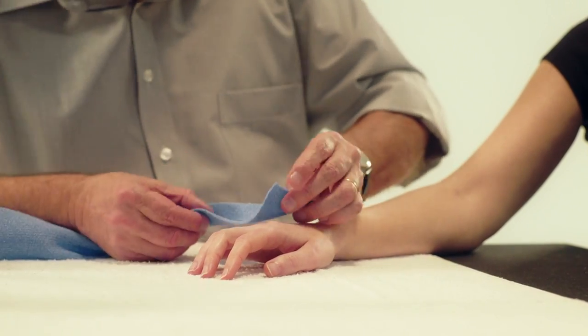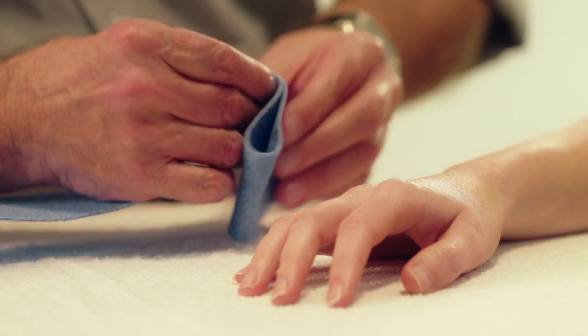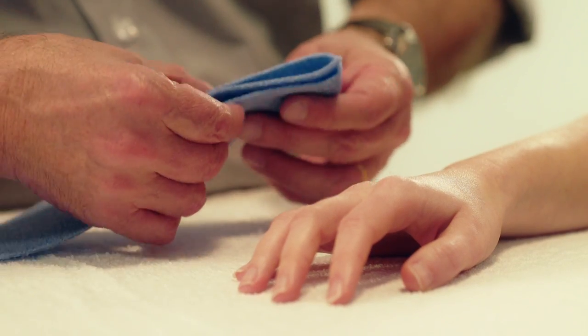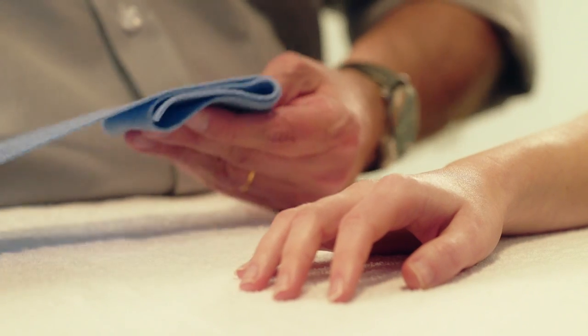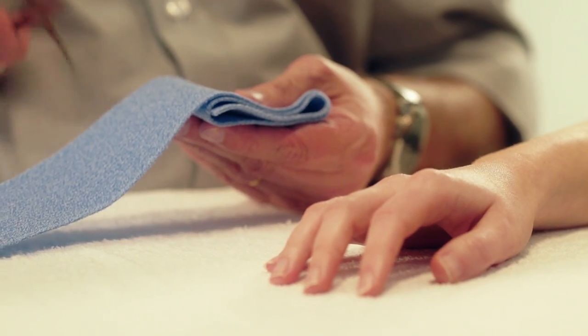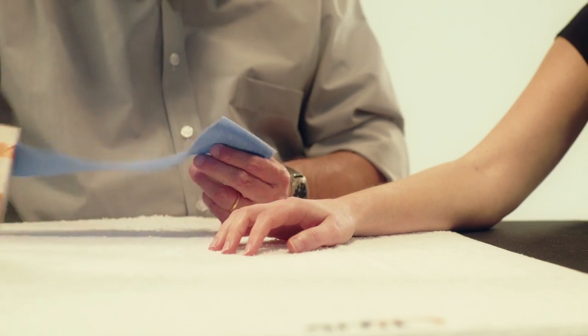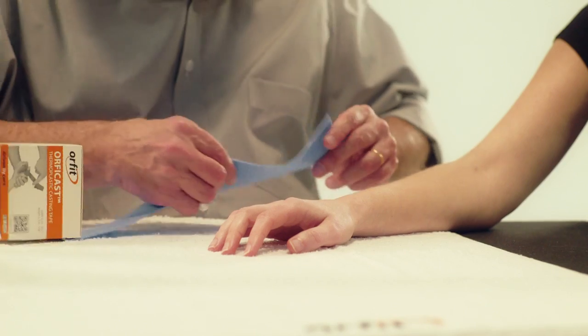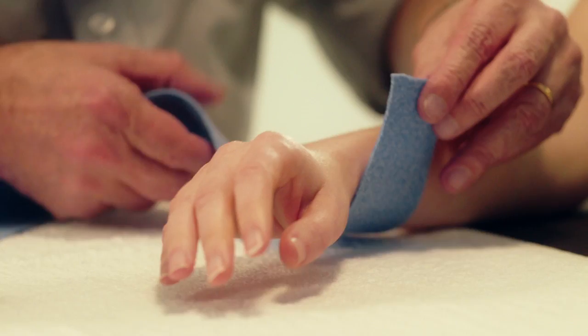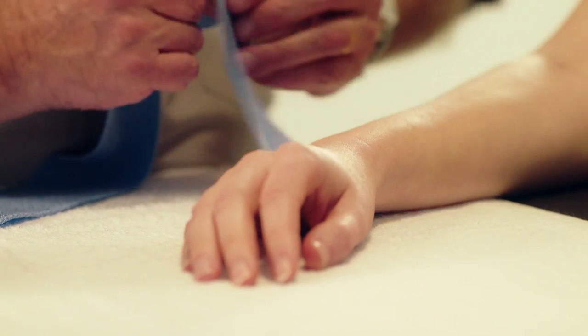We will need two different pieces of Orphicast. Take the first strip of Orphicast six centimeters wide, measure four times the width of the hands at the level of the MCP joints and cut it accordingly. Take a second strip of Orphicast six centimeters wide, measure two times the circumference of the wrist and cut it accordingly as well.